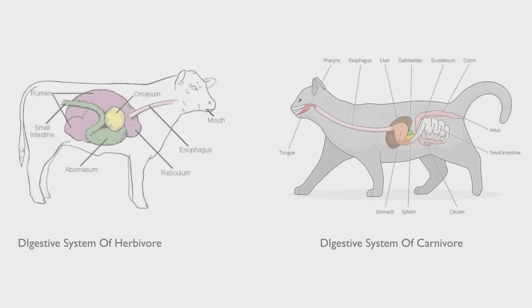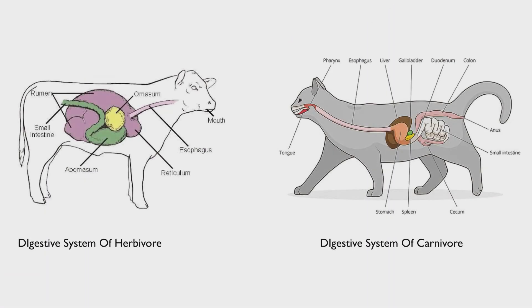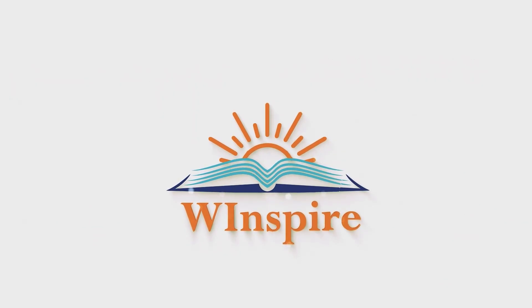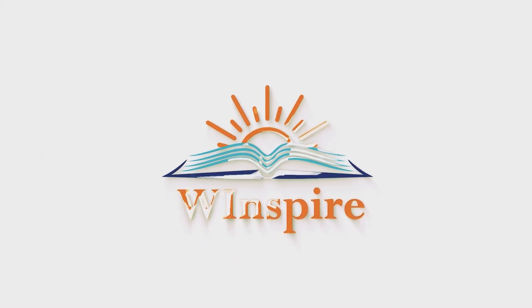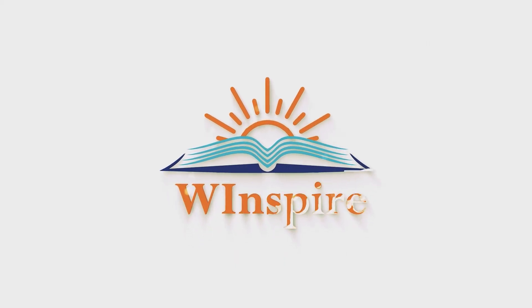So guys, these are the key differences between the digestive system of herbivores and carnivores. If you like this video content, please do not forget to write down in the comments and like our video. We will see you again in the next video. Until then, watch WinSpire and keep inspiring.